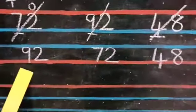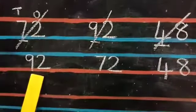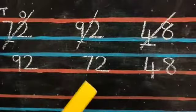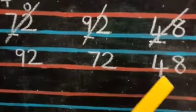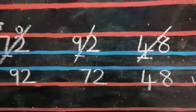After writing, check, children. This number should be bigger than the next number. 92 is bigger than 72, yes. 72 is bigger than 48, yes. So this is correct.